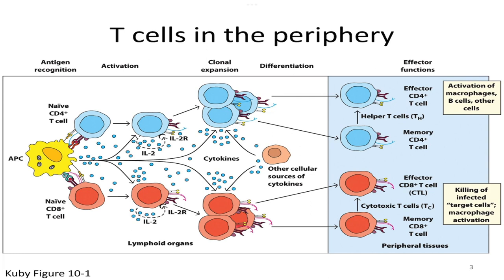The naive CD4 T-cell will become a helper T-cell; the naive CD8 T-cell will become a cytotoxic T-cell. It's important to realize these cells are not cytotoxic or helper at the beginning — they need activation and differentiation in response to antigen. If the naive CD8 T-cell were cytotoxic from the start, it would have killed the antigen presenting cell immediately, preventing activation of any more cells.